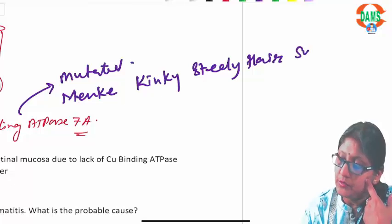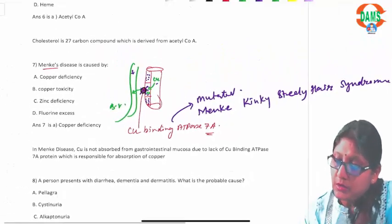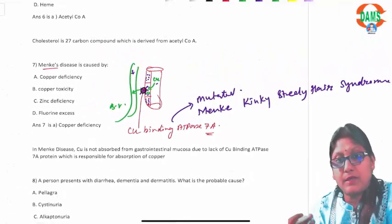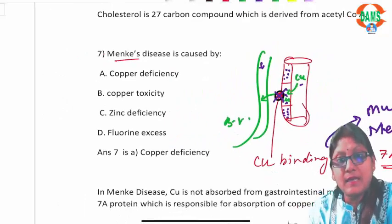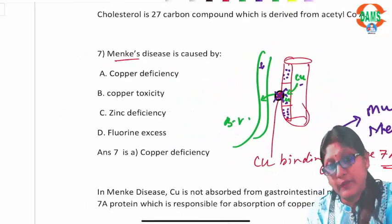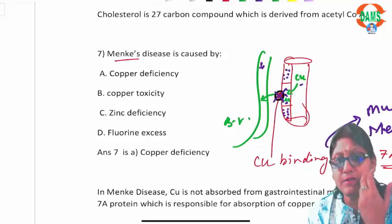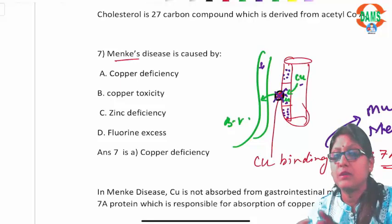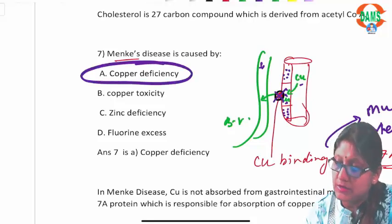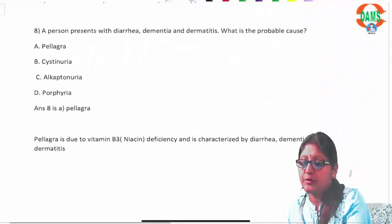Menke's disease is also called steely hair syndrome, caused by copper-binding ATPase 7A mutation. In the blood vessels, copper is deficient, so all copper-dependent enzymes — like cytochromes, tyrosinase, and ceruloplasmin — are not functioning properly.